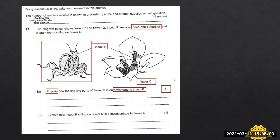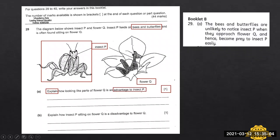Let's look at the model answer some student will give. This is actually the model answer supplied by the publisher. The bees and butterflies are unlikely to notice insect P when they approach flower Q and hence become prey to insect P. Sometimes this model answer can be quite complicated for students who have difficulty in their English or sentence structure. So what it means is that by looking like this flower Q, the bees or the butterflies when they come near to the flower for pollination, they will not notice this insect P, which is actually a praying mantis so easily. So the praying mantis can actually catch the bees and butterflies and eat them.